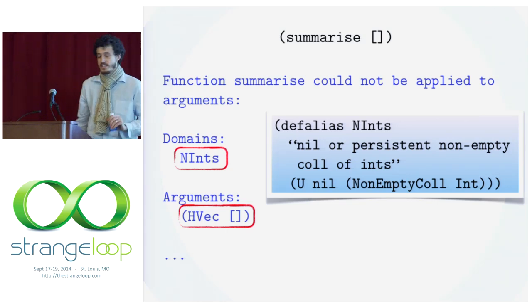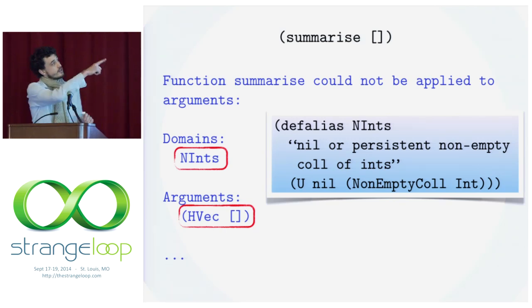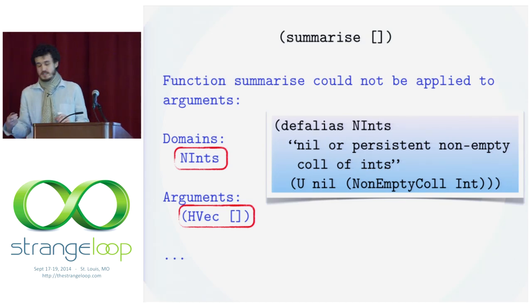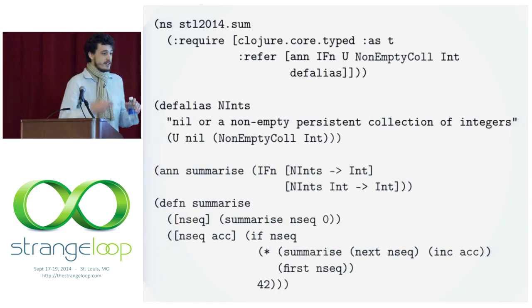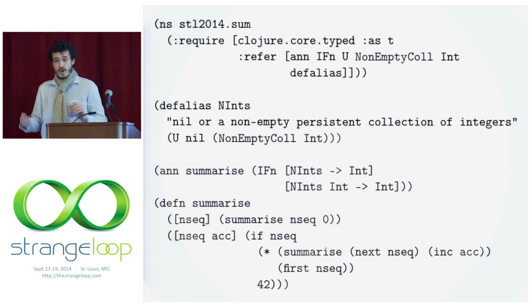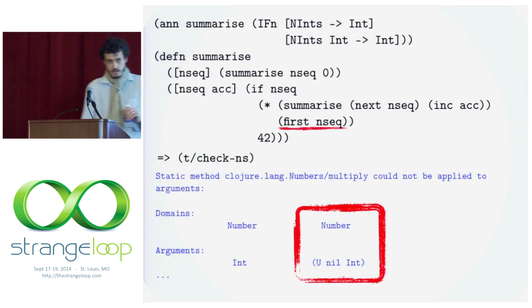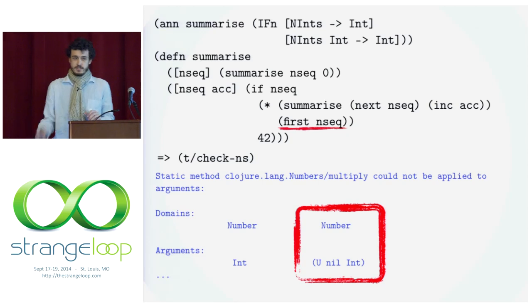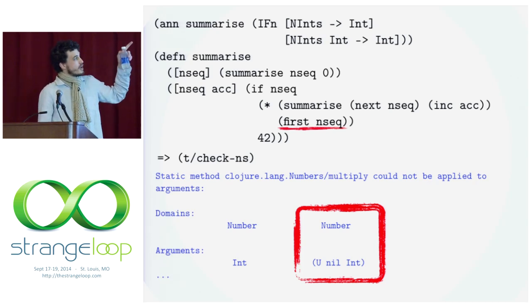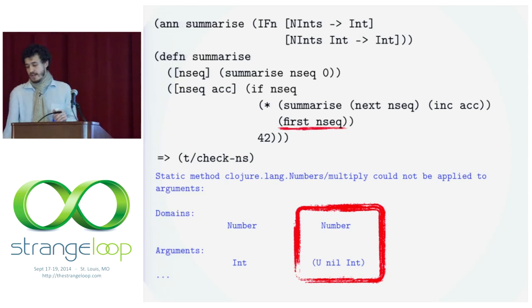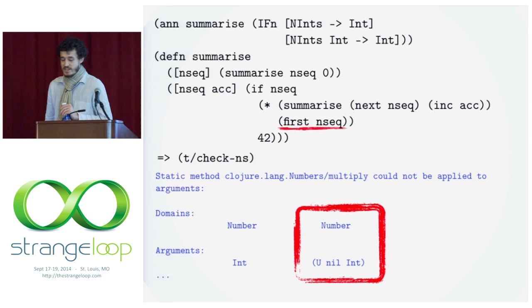Here's our invocation at the top — summarize the empty vector. Type closure tells us we've actually passed an empty vector where we're expecting nillable ints. Nillable ints is a union of nil or a non-empty collection of ints, and of course the empty vector is none of those things. Why don't we just erase any instances of non-empty in this slide and then type check it? Type closure tells us our code is not sufficient to avoid an error, and we get a new invocation error.